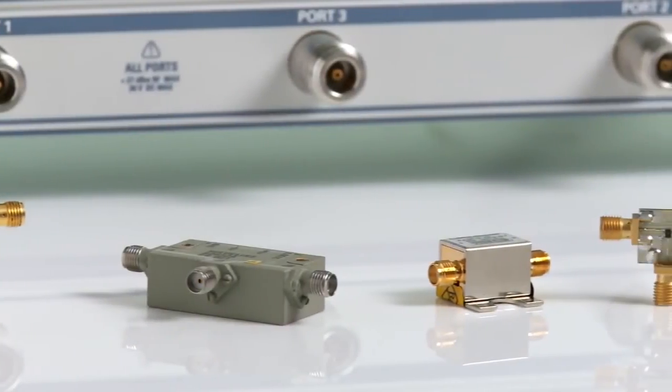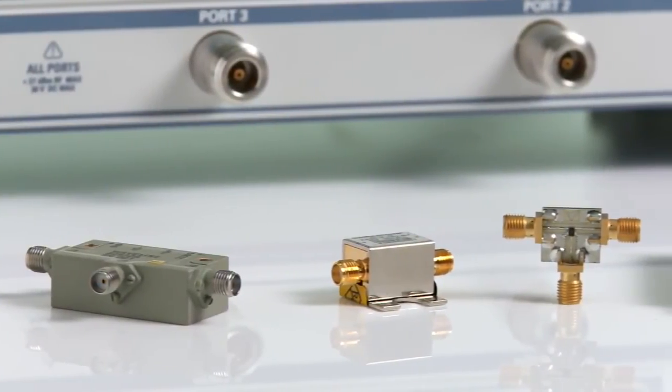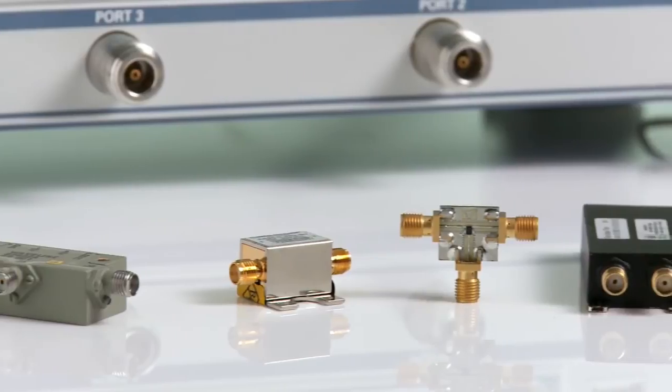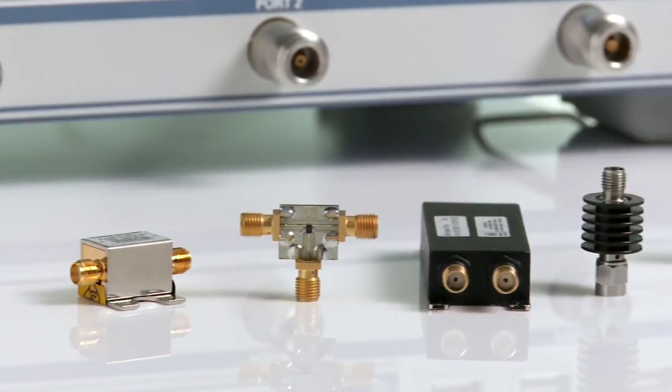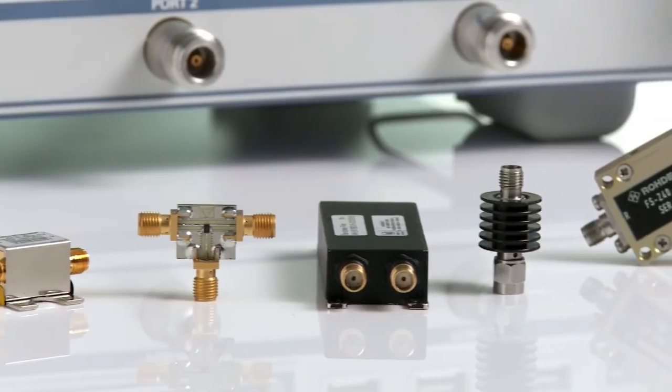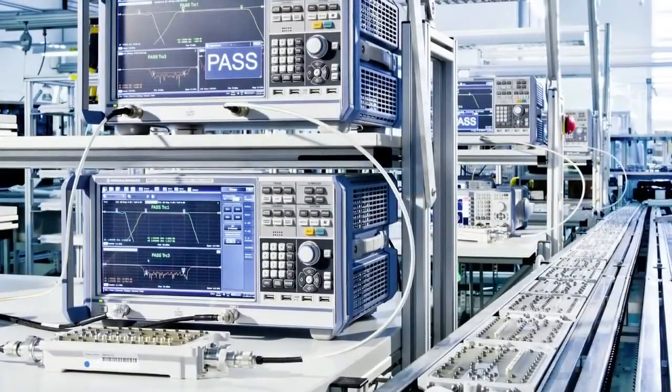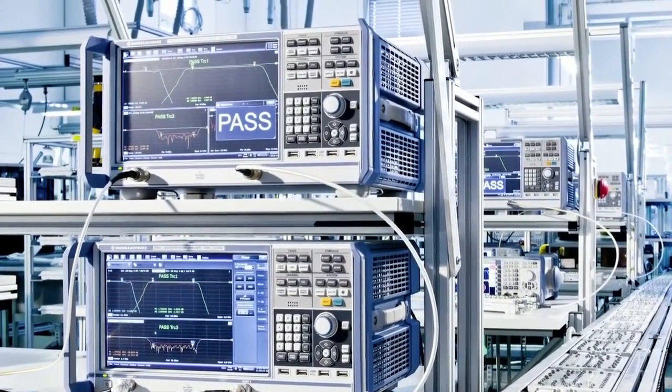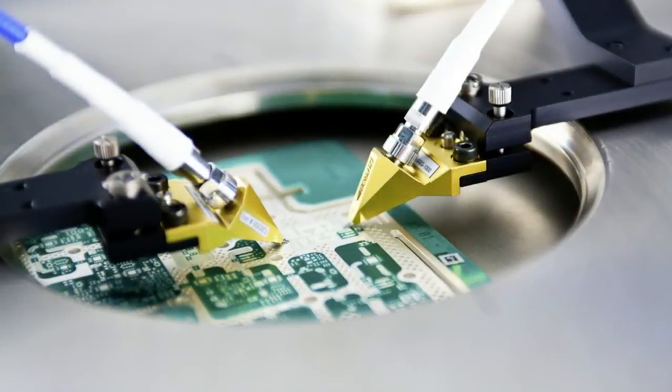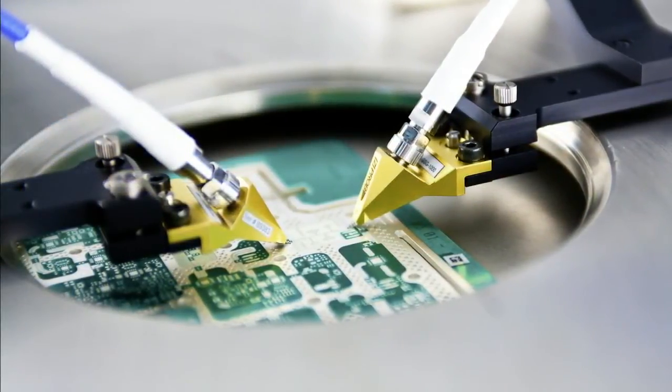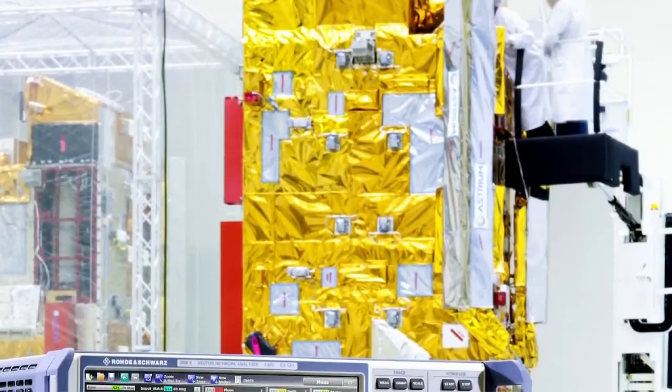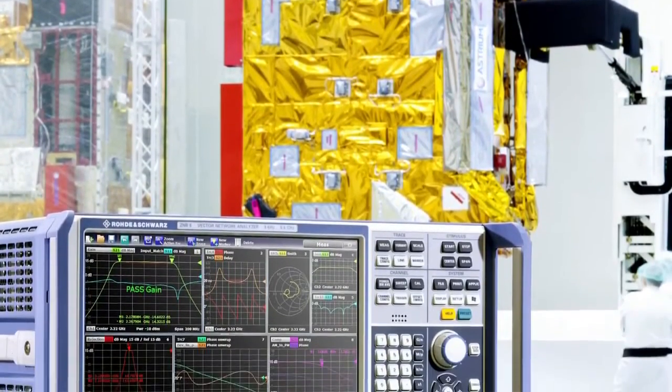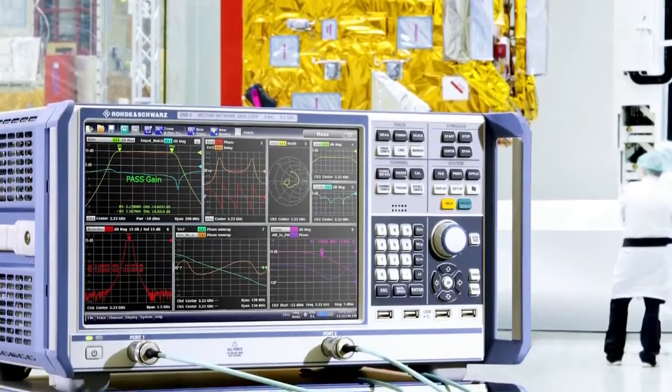As ever more sophisticated RF technologies come into use, ever higher demands are placed on the network analyzers needed to characterize the associated components and modules. The Rohde & Schwarz ZNB was designed from the ground up to meet the demanding requirements encountered in series production of state-of-the-art components, while also delivering the flexibility needed for the lab. In both scenarios, the ZNB sets new standards in its class.